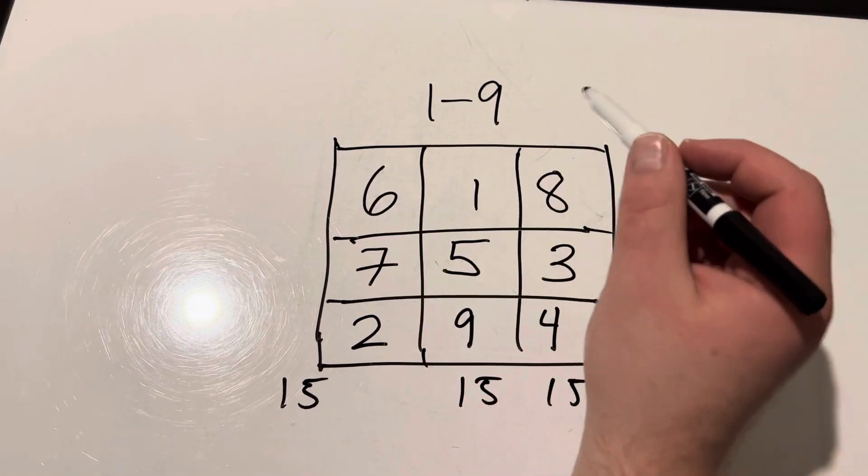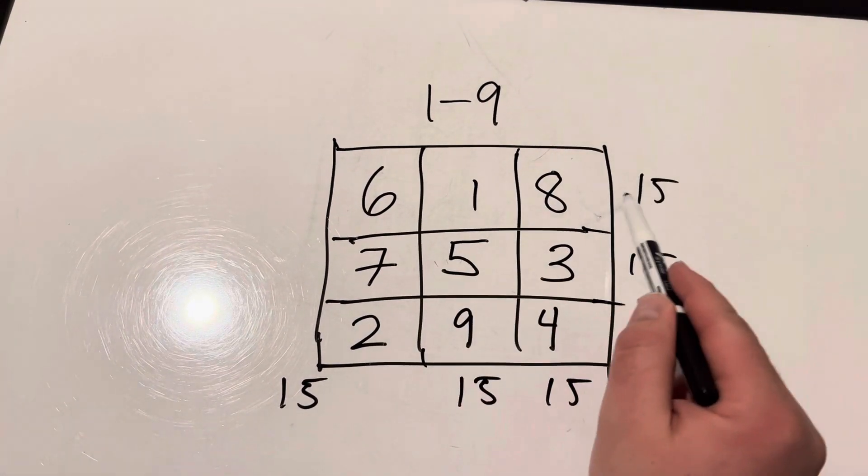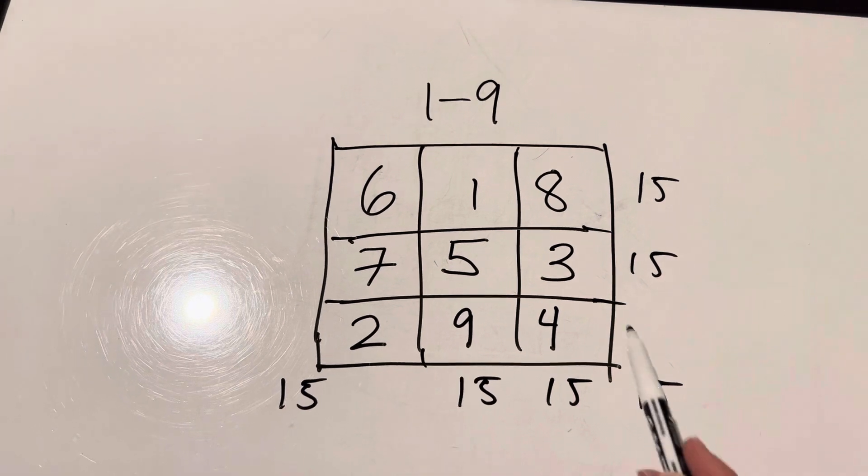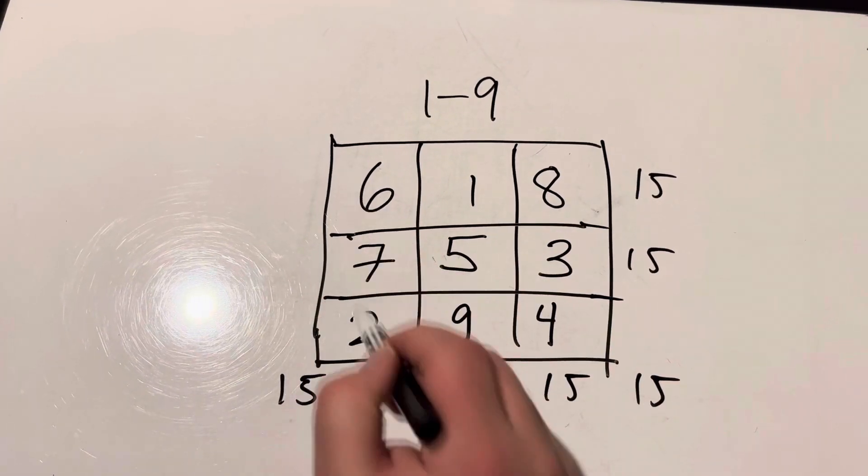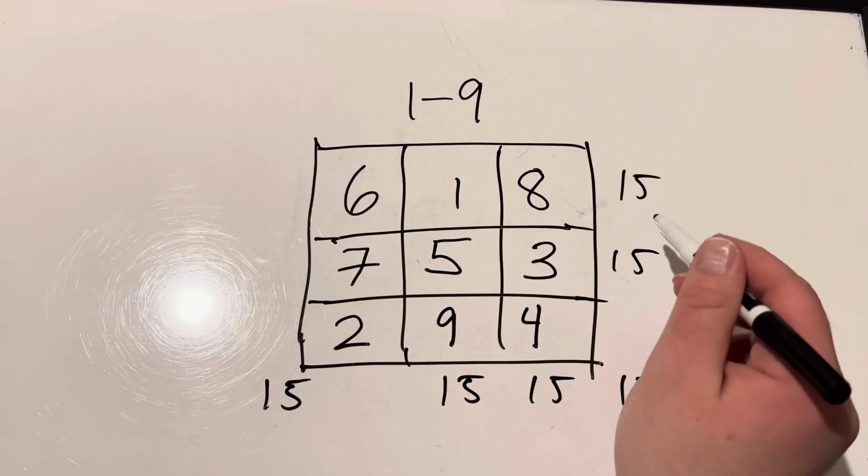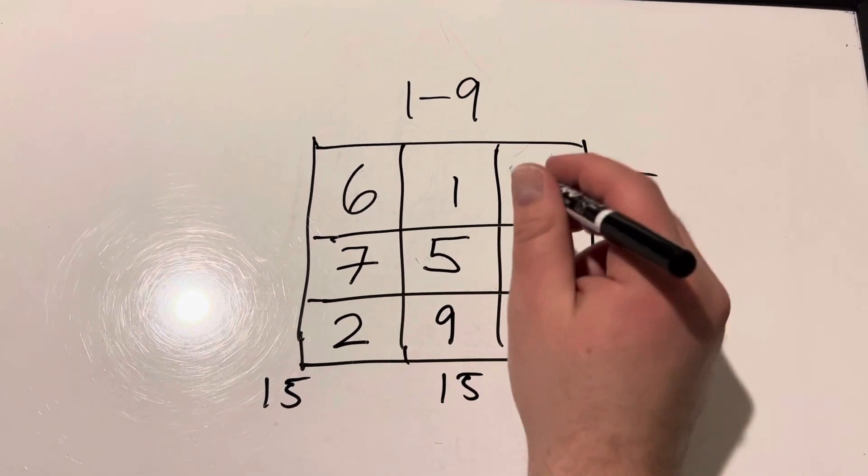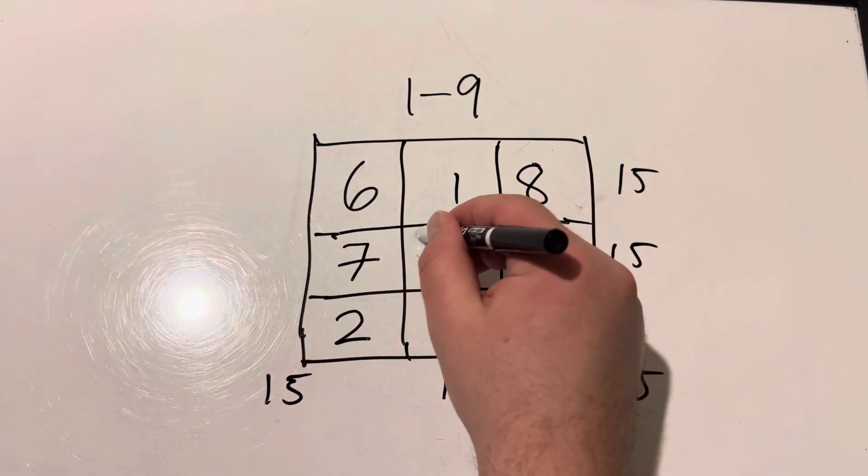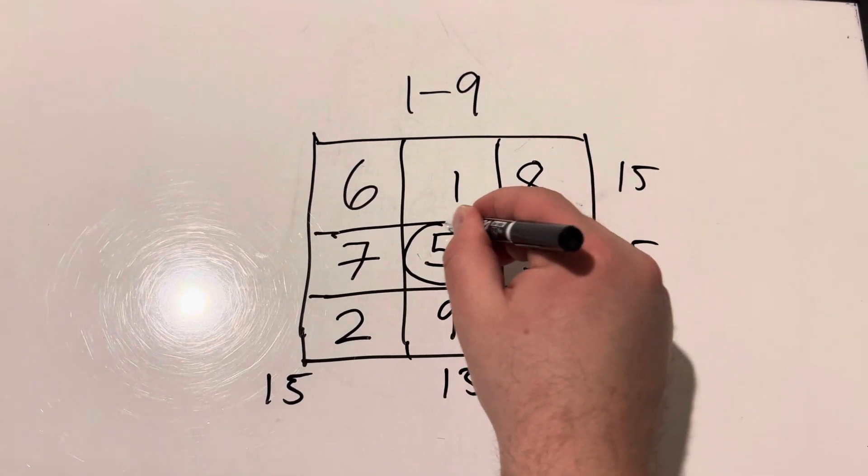So now we have 15, 15, 15, 15, 15, 15, 15. No matter what way you go, it's gonna be 15. We've solved the puzzle all by putting five here in the middle.